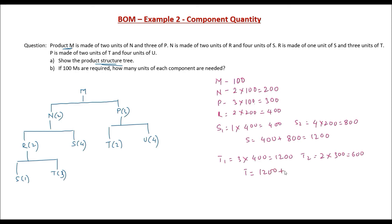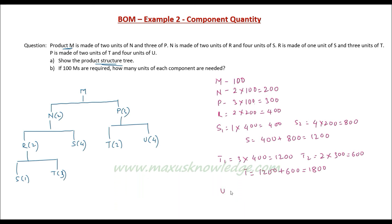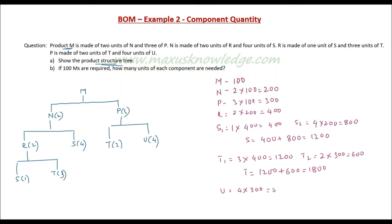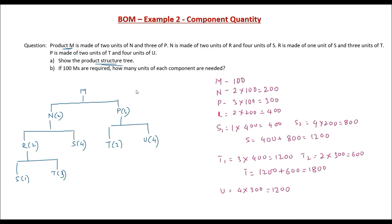Total T = T1 + T2 = 1200 + 600 = 1800 units. Finally, U: four units are required for each P, so U = 4 × 300 = 1200 units. This is how the BOM and the quantities of each component help in arriving at the quantities needed to manufacture the finished product. You will basically manufacture or place a purchase order for these quantities of the components.